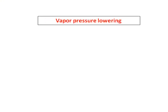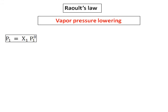We are going to do qualitative properties focusing only on vapor pressure lowering. Vapor pressure lowering is defined by Raoult's Law. Raoult's Law states that the vapor pressure of a solution is equal to the mole fraction of the solvent times the vapor pressure of the pure solvent. So we get P₁ = x₁ · P₁⁰.